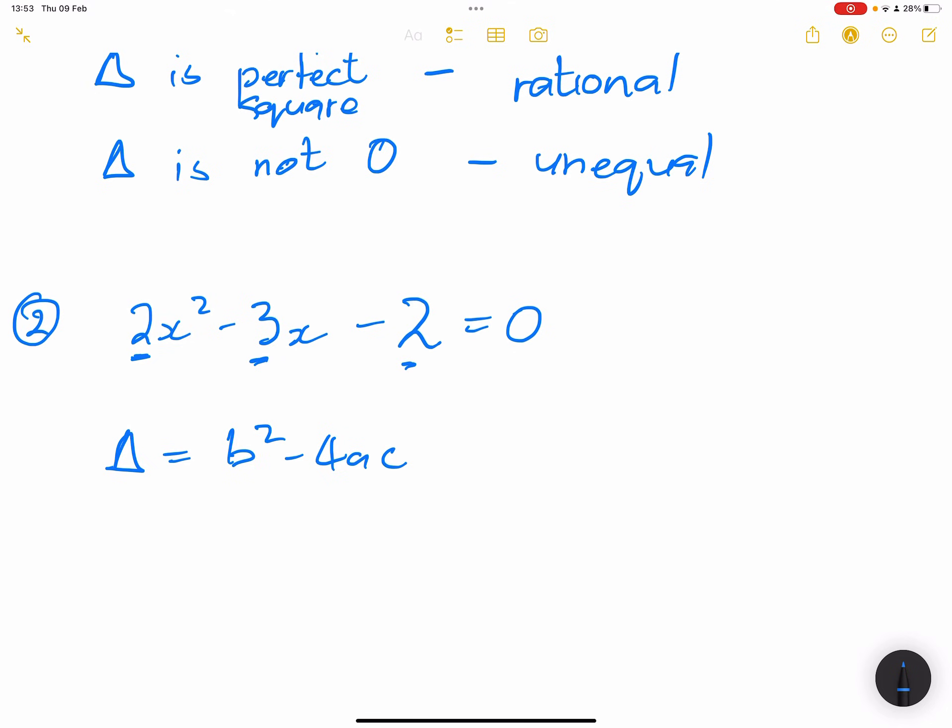So in this case we've got b², that's (-3)² minus 4 times our a value, which is 2, and our c value is -2. So I've got 9. Four times 2 gives me 8, and 8 times 2 will give me 16. But in this case, remember negative times a negative is a positive, so that will be 9 + 16.